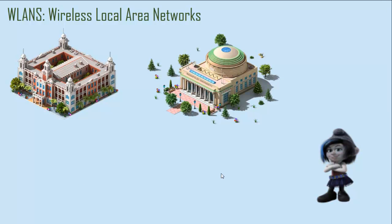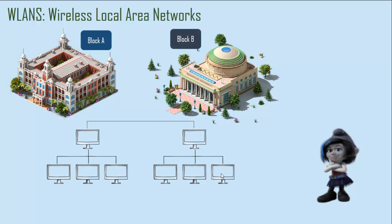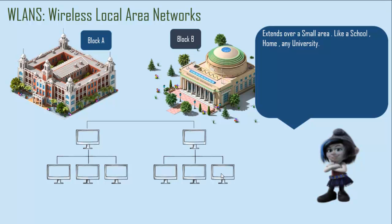Then we have the wireless local area network. You can consider it to be two or more computers extended over a small region. For example, these two buildings are part of a campus — block A and block B — and they are connected together as a wireless local area network. It doesn't extend more than a building or campus, and the standard is IEEE 802.11.